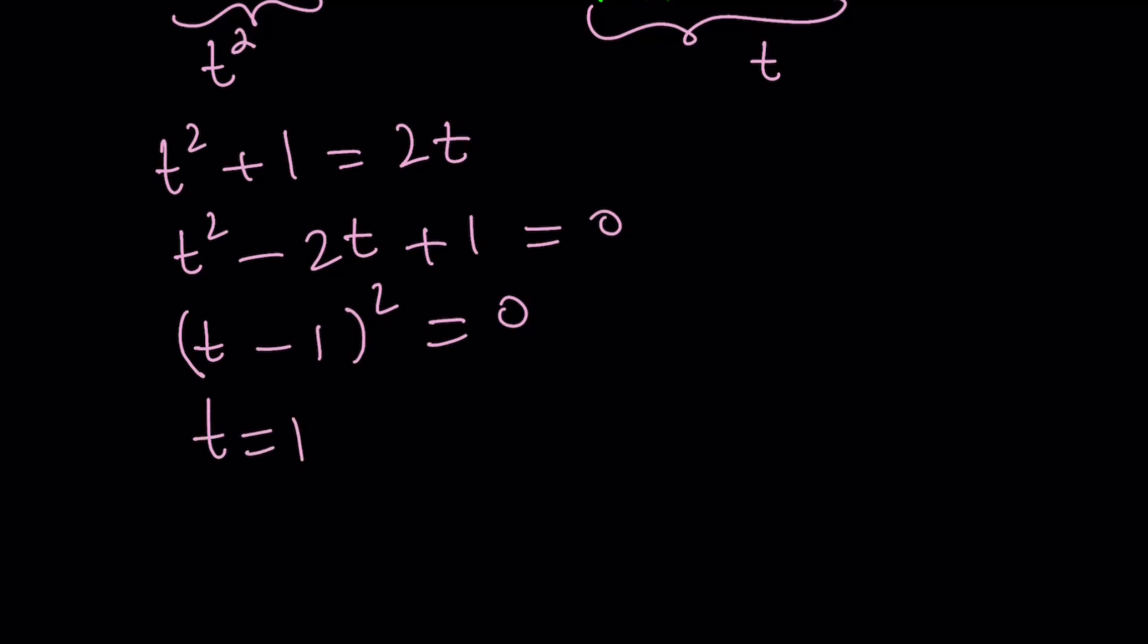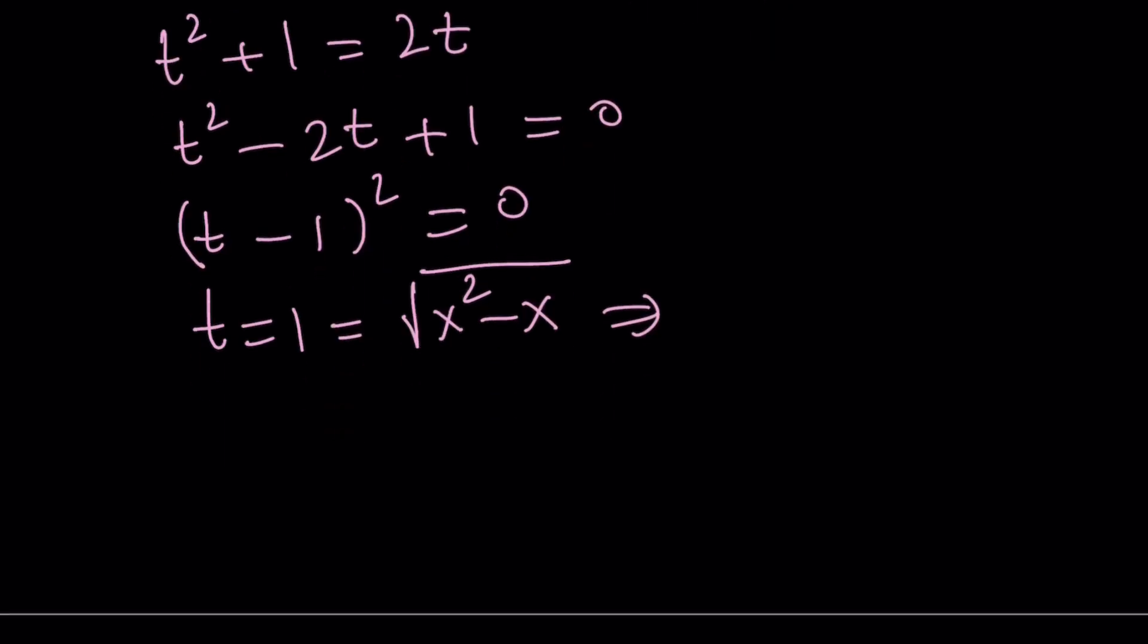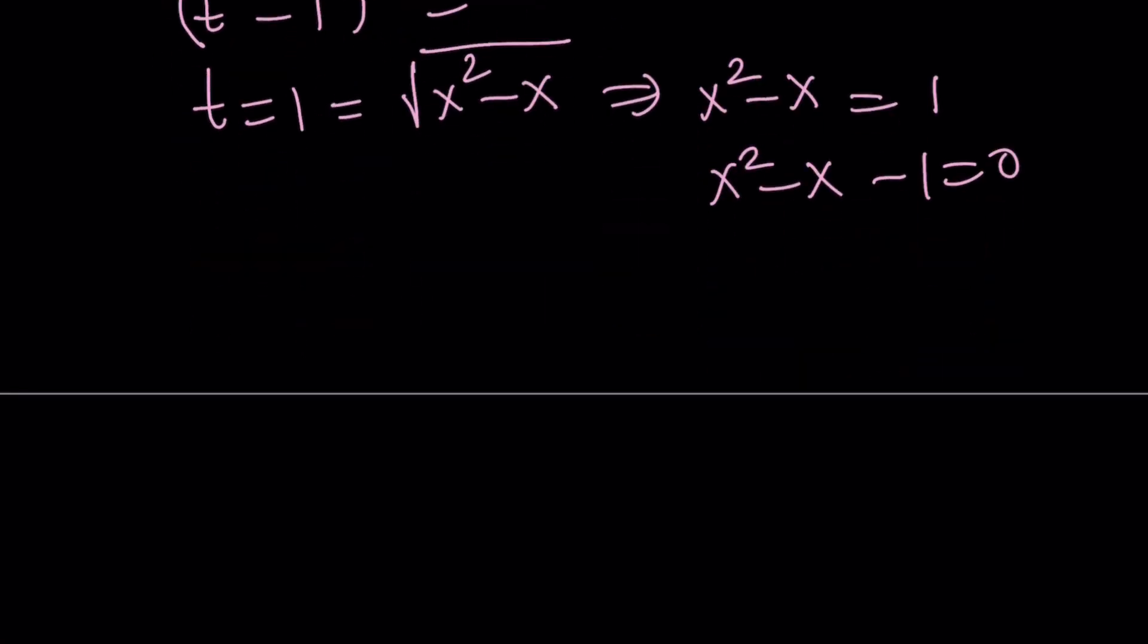But what is t? t is the square root of x squared minus x. Therefore from here we get the following equation. Square both sides, x squared minus x equals 1. Or x squared minus x minus 1 is equal to 0. And yes, the golden ratio one more time.